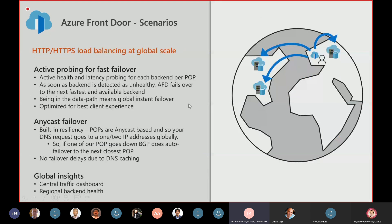Coming to load balancing — each of our POPs across the globe probes each of the backends the customer has, so we know the latency to each application server and whether it's up. Because we're in the data path and this is not DNS-based load balancing, we can fail over immediately, in a matter of seconds. As soon as our health probes verify that a backend is down, we immediately fail over from there.